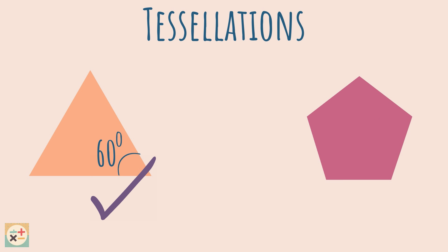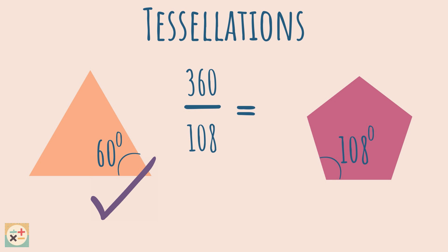Here we have a regular pentagon with interior angles of 108 degrees. 108 does not divide fully into 360, as we are left with a decimal number. Therefore, this shape does not tessellate. There will be gaps in the pattern.